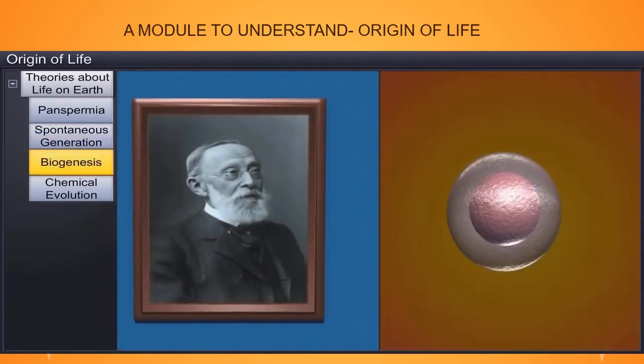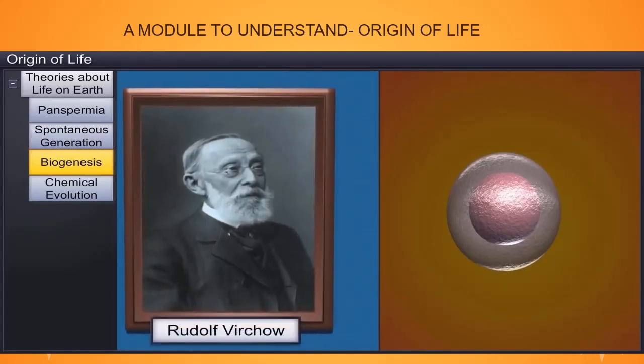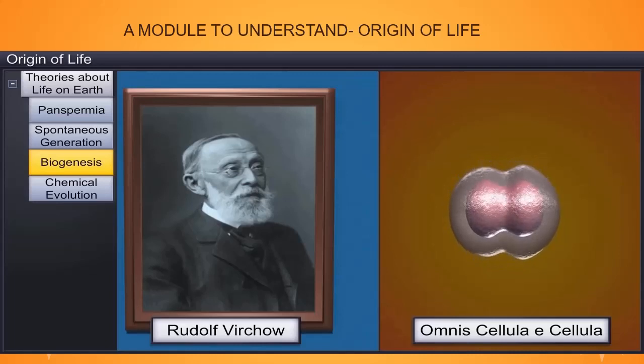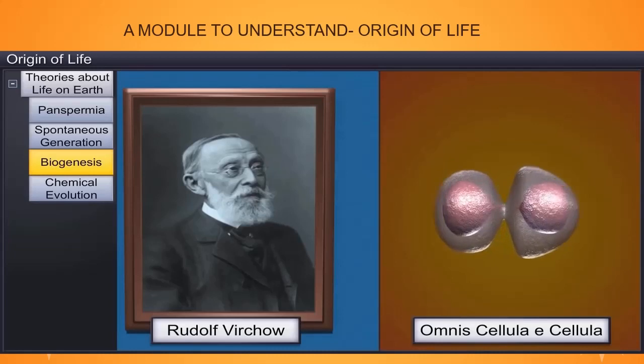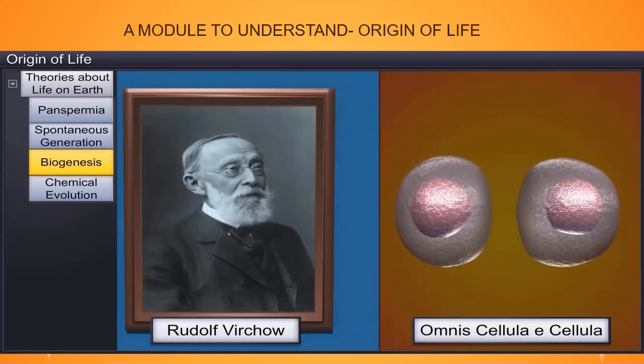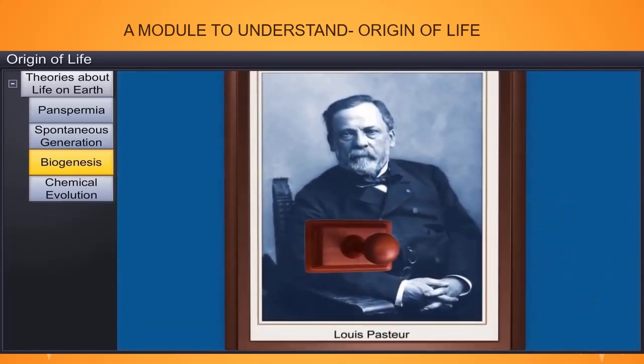The theory of spontaneous generation was in vogue until a German biologist, Rudolf Virchow, challenged it with his theory called Omnis cellula e cellula, which expounded that living cells can arise from pre-existing cells. However, he could not prove this theory of biogenesis. Later on, Louis Pasteur, with his experiments, proved the theory of biogenesis and forever silenced the advocates of spontaneous generation.